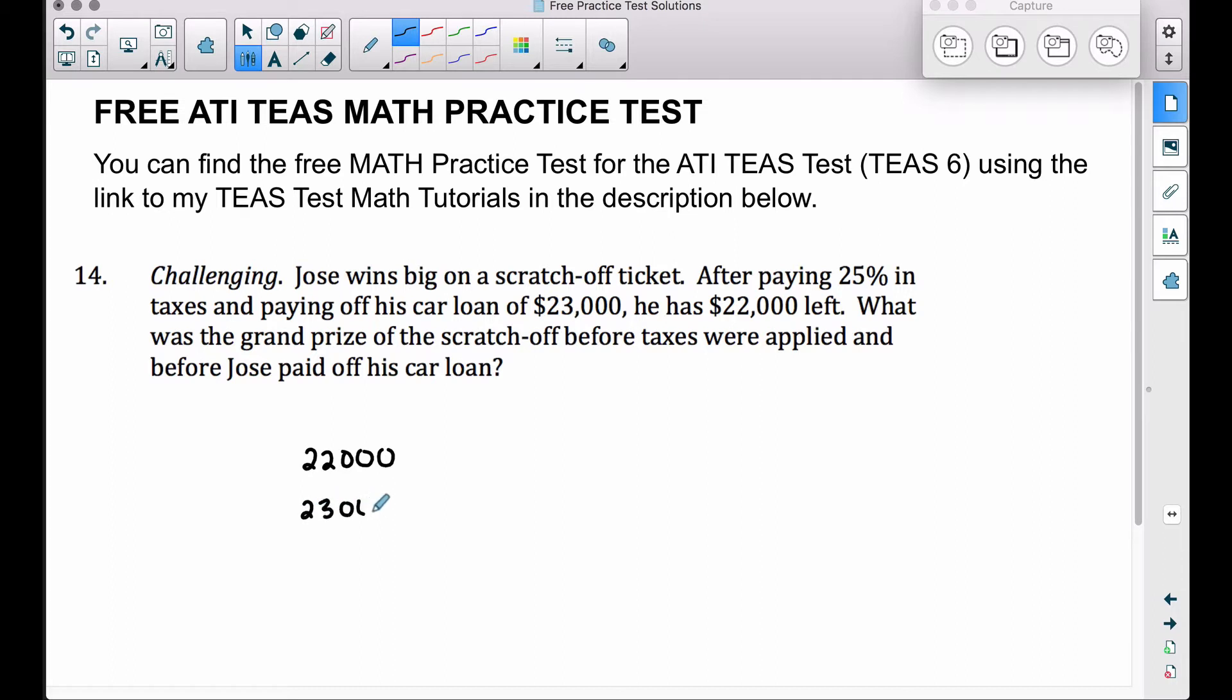Well, he has $22,000 left, and if he paid off the car loan prior to that, he had $22,000 plus $23,000. That's a total of $45,000. Now this is how much Jose had after he paid 25% in taxes, because he paid off his car loan of $23,000 and he had $22,000 left.